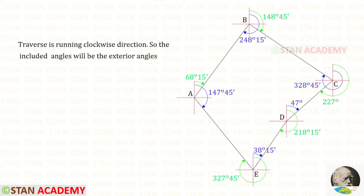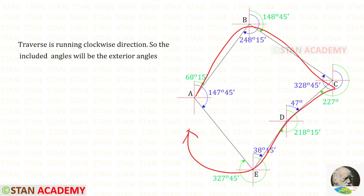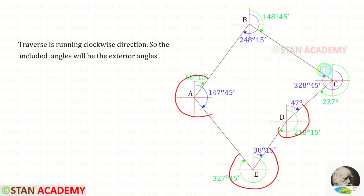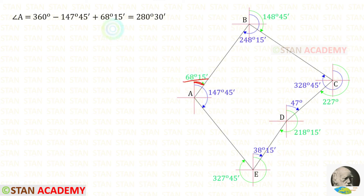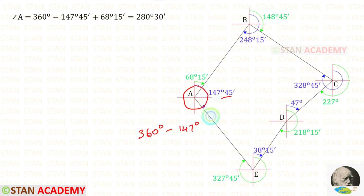Now we are going to find the included angles. The traverse is running in the clockwise direction, so the included angles will be the exterior angles. Let us find the exterior angle at station A. We split the angle into two parts — right side and left side. The right side angle is 68 degrees 15 minutes. For the left side: 360 degrees minus 147 degrees 45 minutes. Adding these two parts gives the exterior angle at A.